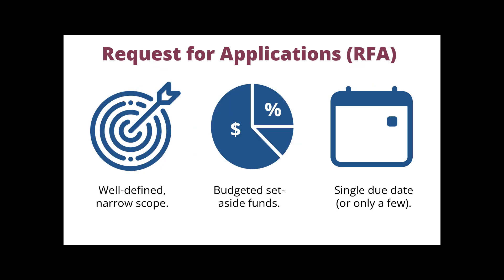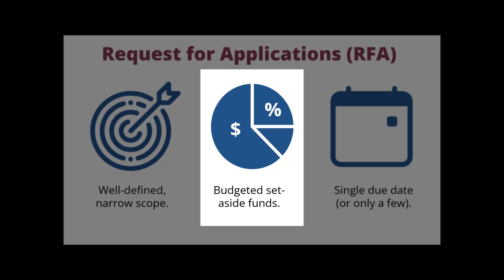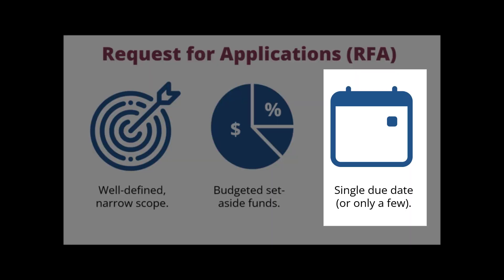Let's start with Request for Applications, also known as RFA. RFAs have a narrow, well-defined scope with specific program objectives. Participating ICs set aside funds in their budgets to award applications. The Award Information section of the RFA indicates the number of expected awards and/or the total amount of funds budgeted. RFAs often have a single due date and may not be posted again.